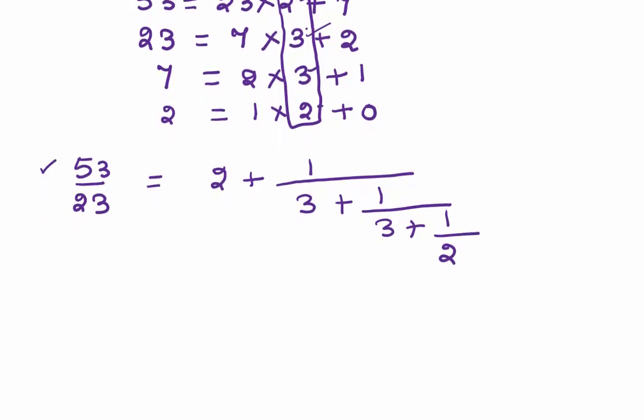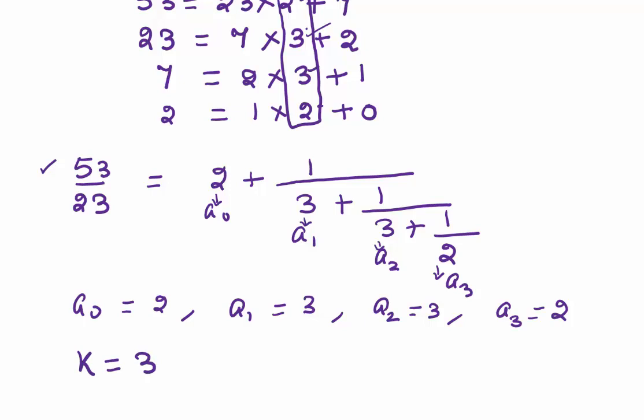Now, few things you have to see. All these terms are our A's. This is a0, this is a1, this is a2, and this is a3. So we have a0 = 2, a1 = 3, a2 = 3, a3 = 2. How far have we gone? We have gone up to a3, so my k value is 3. This is something we will be using.